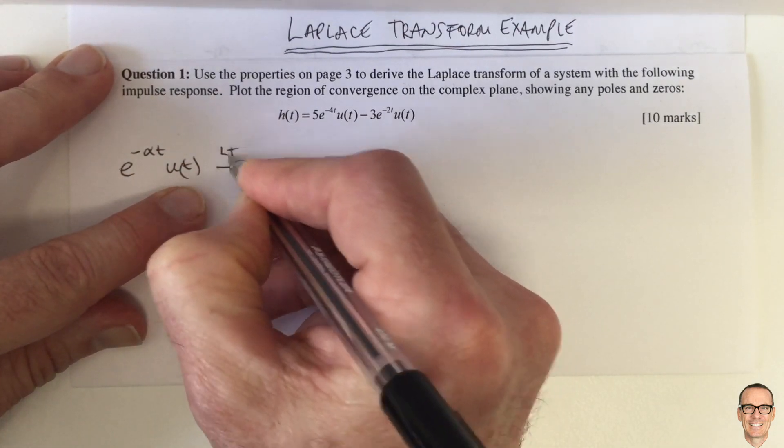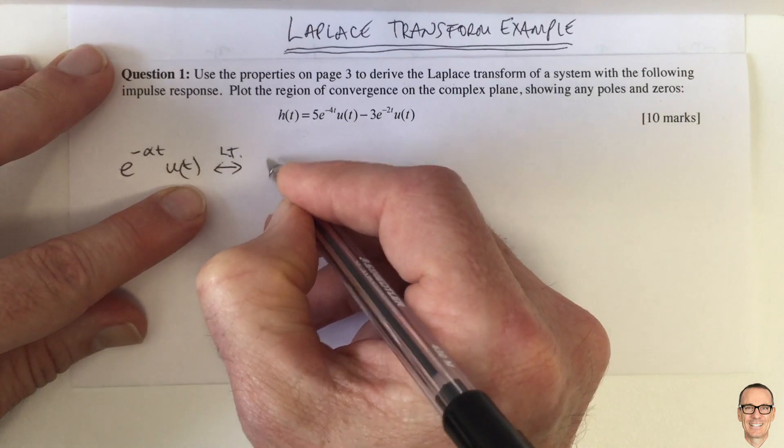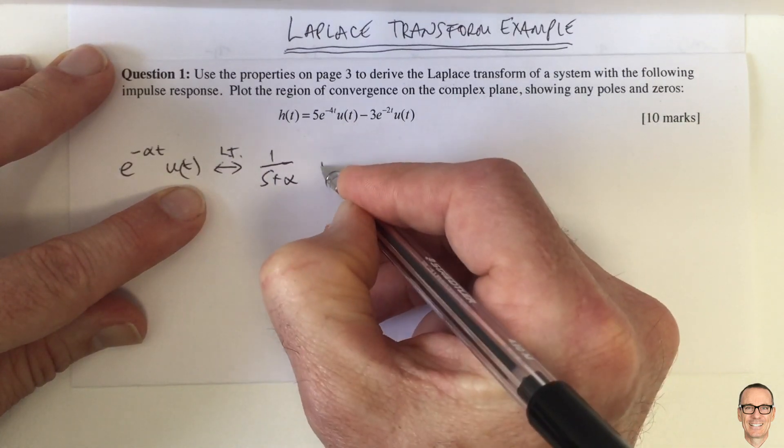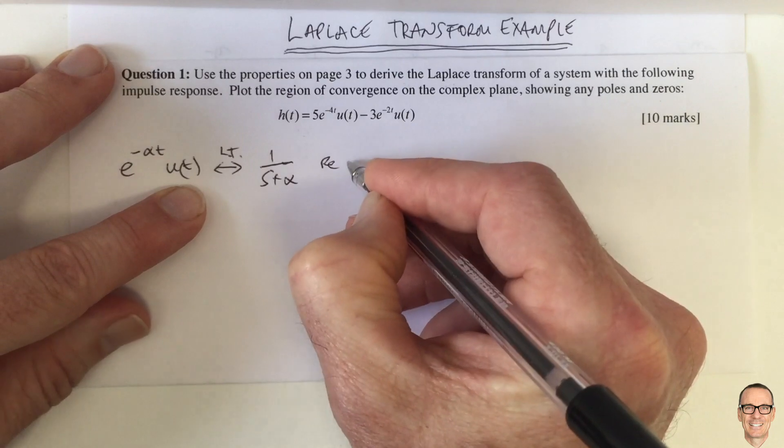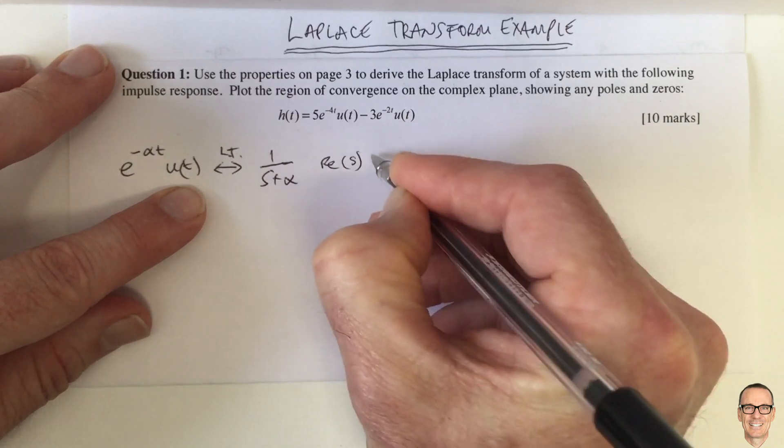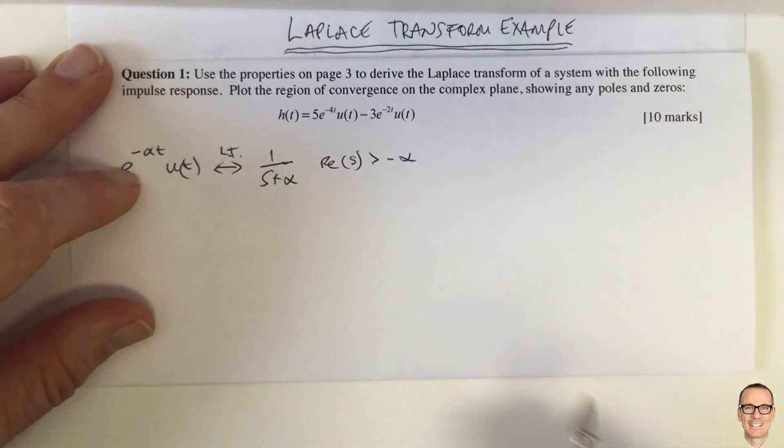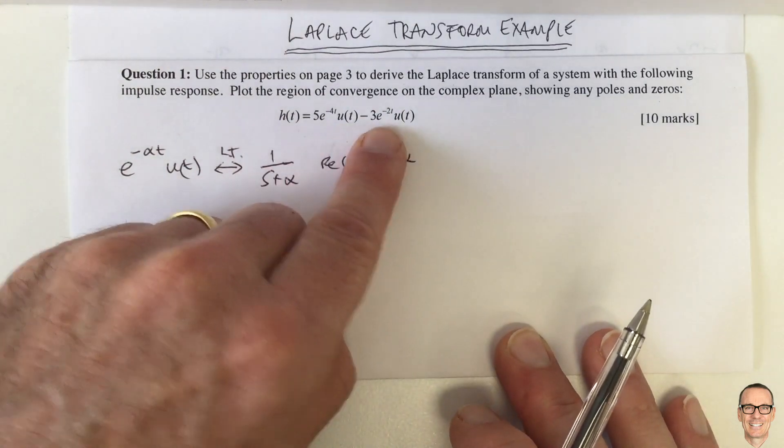it has a Laplace transform of 1 divided by s plus alpha, and the region of convergence is for real values of s bigger than minus alpha. And that's what we have here, two terms like this.